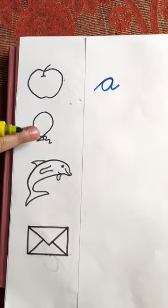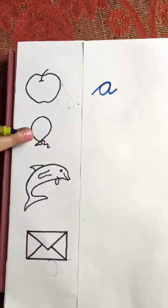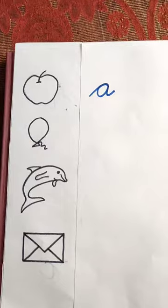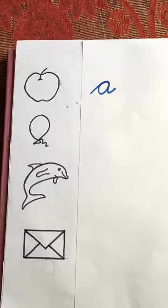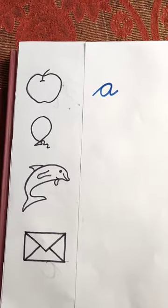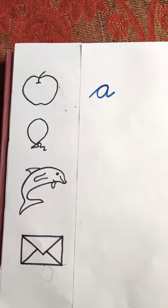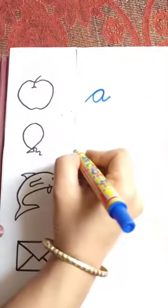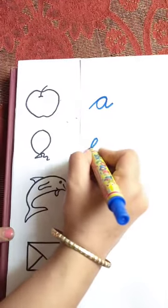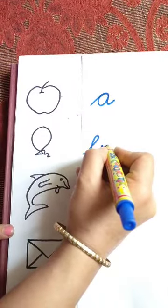This is the picture of balloon. Balloon. Balloon. The beginning sound of balloon is B. And B is the sound of B. How we will write B? We will write B like this.